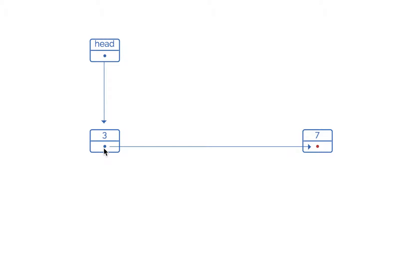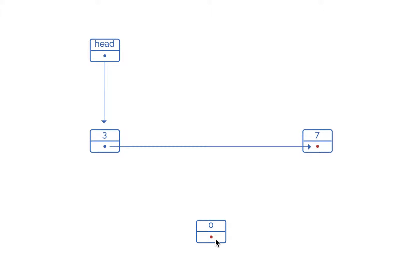The pointer is now shown in blue, meaning the node with value 3 is connected to the node with value 7. The red pointer means it is null — not connected to any other node. Now suppose we want to add one more node. We have initialized this node and assigned 0 as the data part. Since the node is not connected to any other node, the pointer part is null. We will add this node as the last node in our linked list.